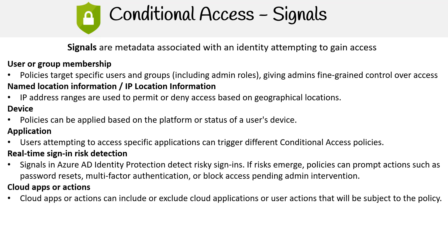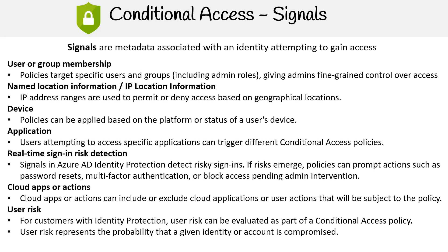Cloud apps or actions can include or exclude cloud applications or user actions that will be subject to the policy. User risk — for customers with identity protection, user risk can be evaluated as part of a conditional access policy. User risk represents the probability that a given identity or account is compromised.